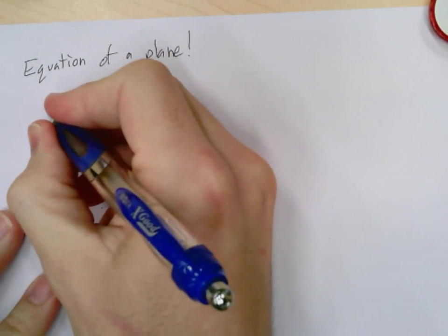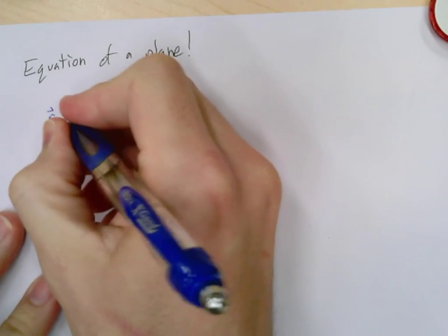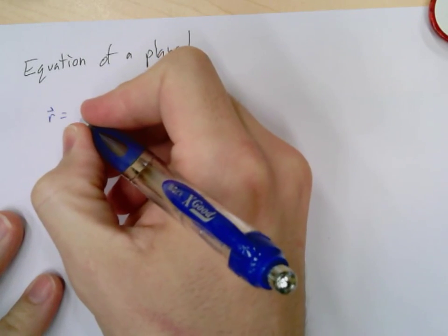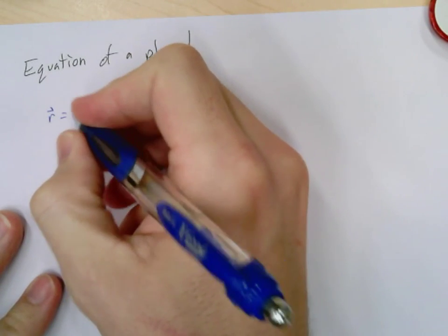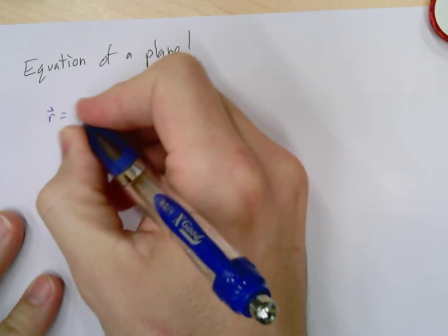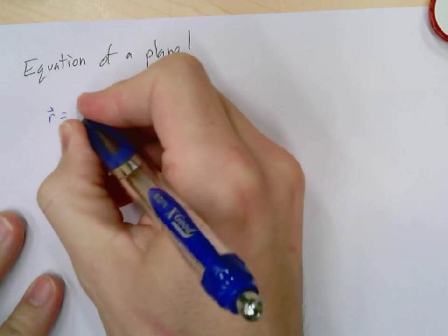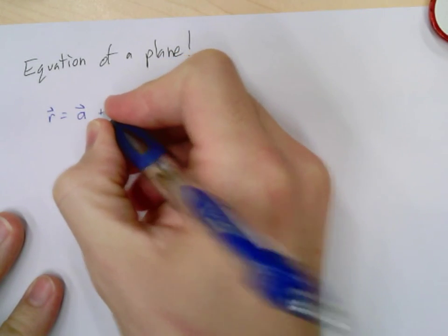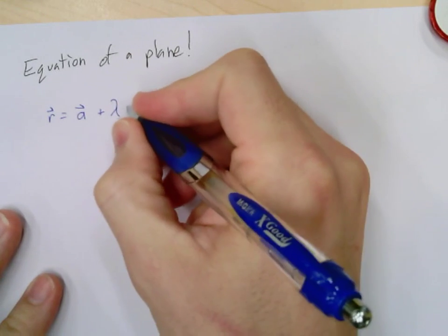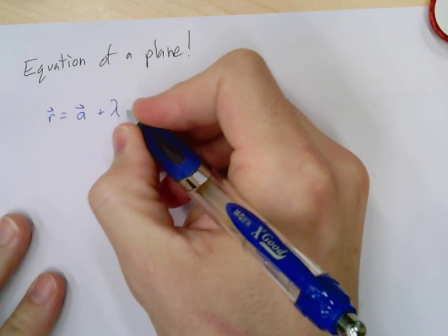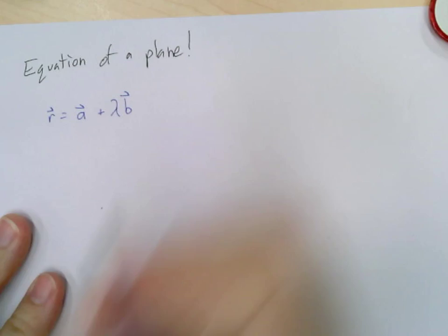I had my line equal to some sort of starting point, because I had just some vector a, and then it was added to some parameter times vector B.